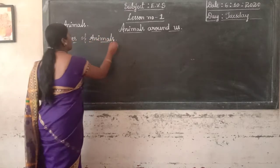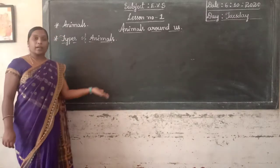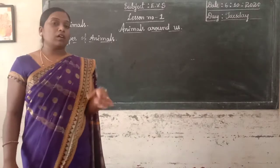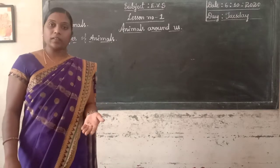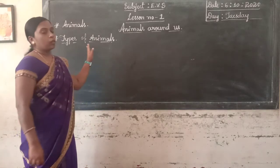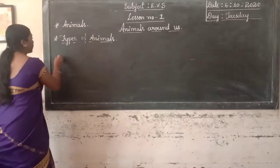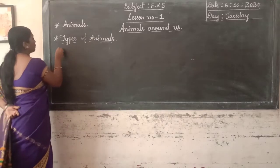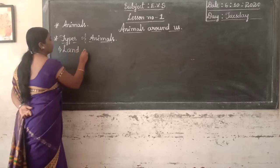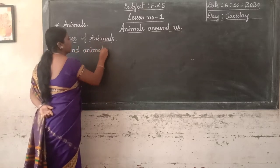Types of animals. Students, we see many kinds of animals found on land, water and air. We divide them mainly into three groups. The first group is land animals.